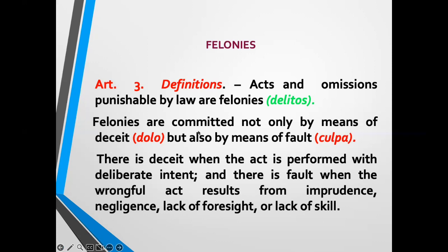Under Article 3 of your Revised Penal Code, it is stated that acts and omissions punishable by law are felonies. When we talk about felonies, these are committed not only by means of deceit, but also by means of fault. There is deceit when the act is performed with deliberate intent, and there is fault when the wrongful act results from imprudence, negligence, lack of foresight, or lack of skill. Remember: acts and omissions punishable by the Revised Penal Code are called felonies.